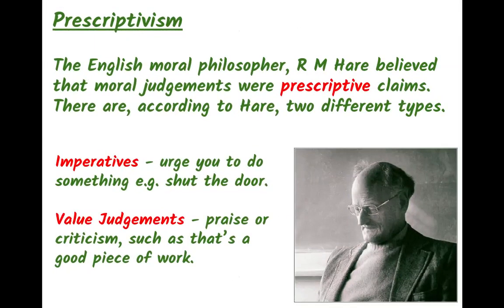Another theory is prescriptivism, associated with English moral philosopher R.M. Hare. He believed that moral judgments are prescriptive claims, of which there are two types. One is imperatives — for example, asking someone to shut the door. The second is value judgments — praise or criticism, such as 'that's a good piece of work' or 'that's a bad piece of work.'